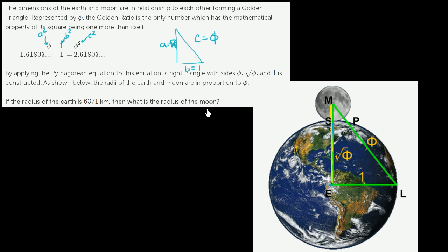If the radius of the Earth is 6,371 kilometers, then what is the radius of the Moon? What is the radius of the Moon? So let's actually redraw this triangle here. But let's draw it in terms of kilometers. Right over here, the measurements are in terms of Earth radii. This right over here is one Earth radii. If this is one Earth radii, then the entire distance, the combined radii of the Moon and the Earth, is square root of phi Earth radii. And the hypotenuse of this triangle is phi Earth radii.